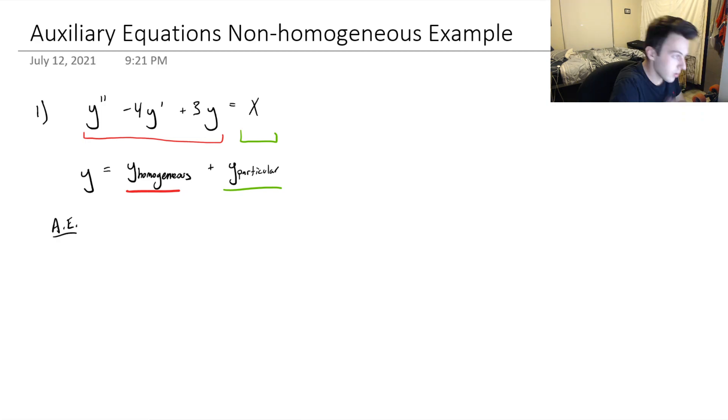So the auxiliary equation for this ODE is R squared minus 4R plus 3 equals 0. So this, we could factor it. I'm going to use quadratic equation because it's easy. So minus B,